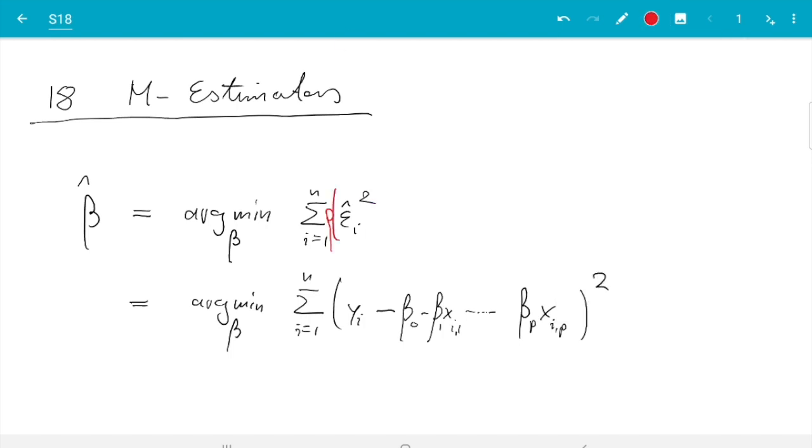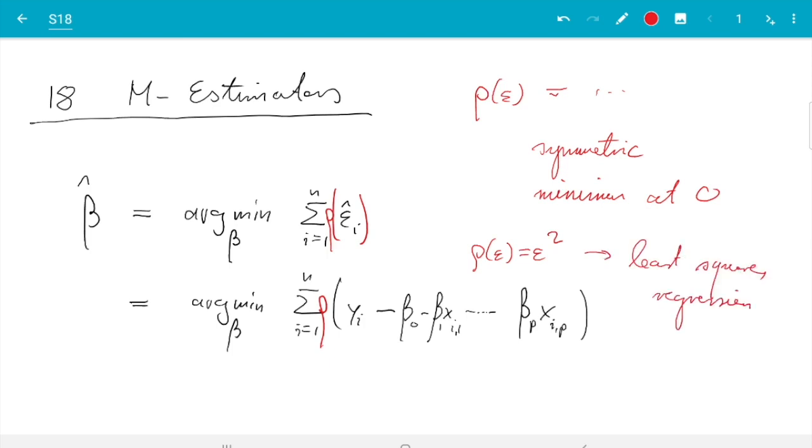So what we do is instead of epsilon squared, we do some function rho of epsilon. Same thing here. And so rho of epsilon is some function. And it should be symmetric. And it needs to have a minimum at zero. Otherwise, the function would not minimize the residuals. And if we do rho of epsilon equals epsilon squared, we have just seen then we get least squares regression.